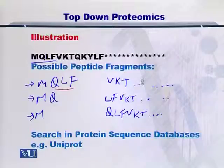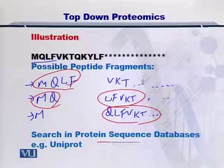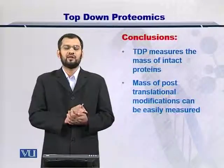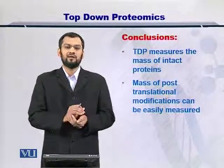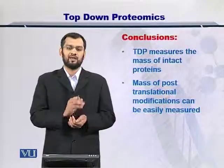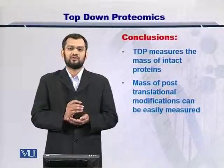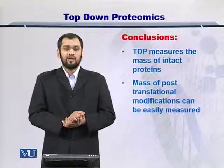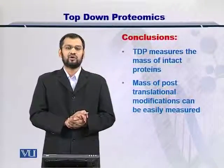Once you have the mass for each of these fragments from the mass spectrometer, you can search the protein sequence databases and try to match these fragments from the database. In conclusion, top-down proteomics measures the intact protein's molecular weight first, then the protein is fragmented, and the peptides resulting from this process are measured again for their molecular weight in MS2, with further fragmentation possible in MS3 and so on. The important thing to remember is that post-translational modifications can be easily measured using the top-down proteomics approach.